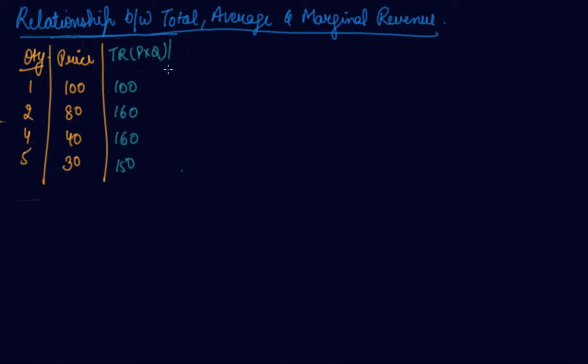We can also calculate the marginal revenue. 100 minus 0 would be 100. At unit 1, you can calculate your marginal revenue, but at unit 0, your marginal revenue is nothing. 160 minus 100 is 60. 160 minus 160 is 0. 150 minus 160 is minus 10.